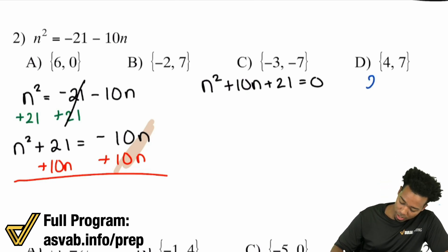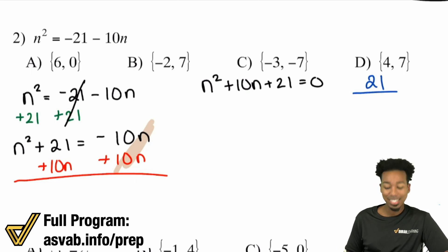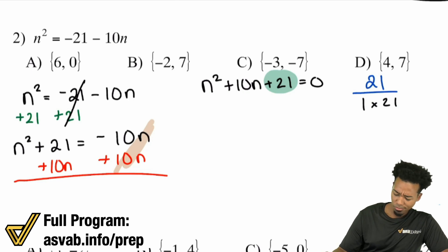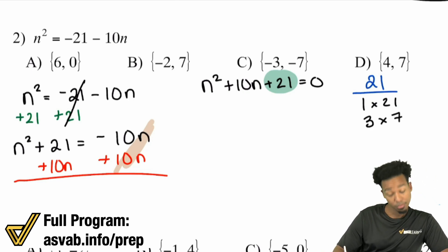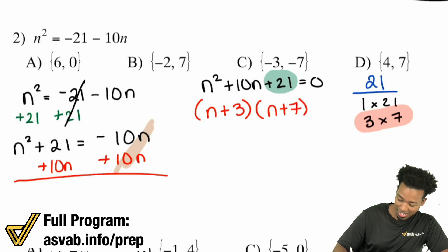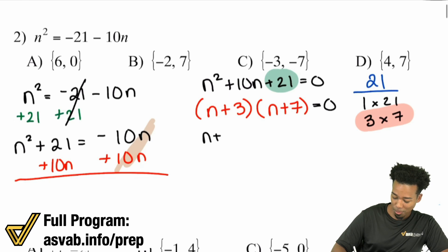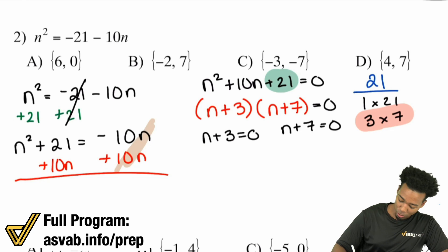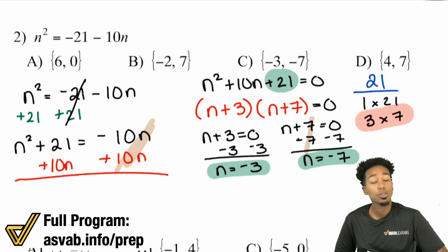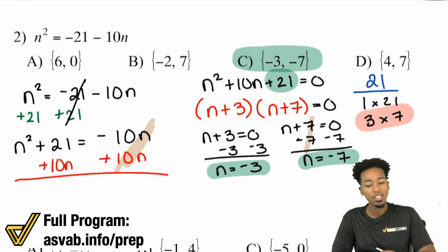Let's find the factors of 21 that add to a positive 10. The factors of 21: 1 times 21 — doesn't add to 10. We have 3 times 7 — that adds to 10. We're good. So we factor into n plus 3 times n plus 7 equals zero. Set that zero product property up: subtract 3 on both sides — n equals negative 3. Subtract 7 on both sides — n equals negative 7. Negative 3 and negative 7 — that is choice C.